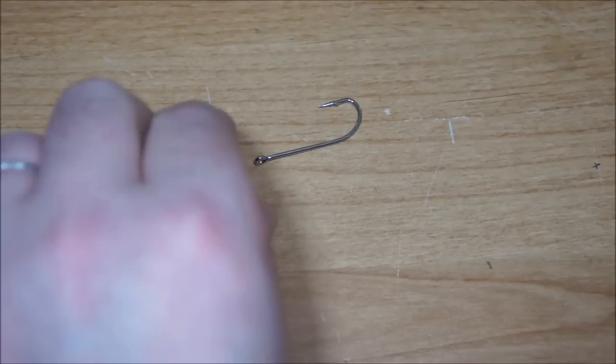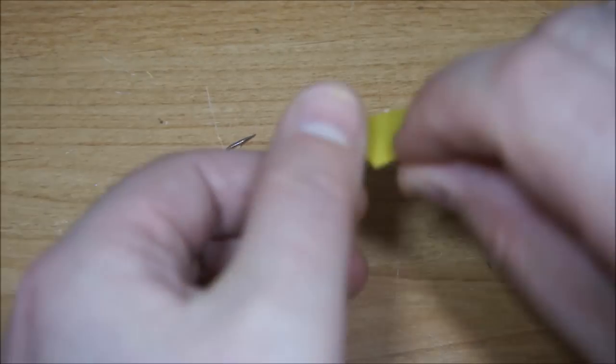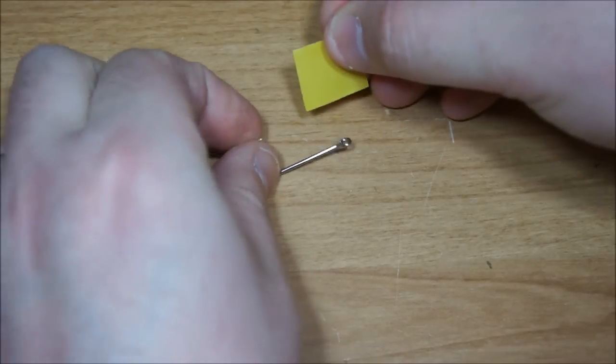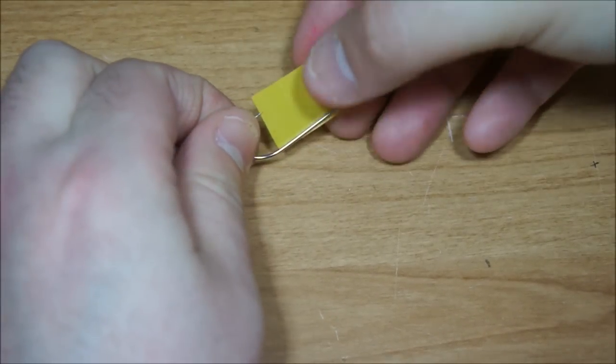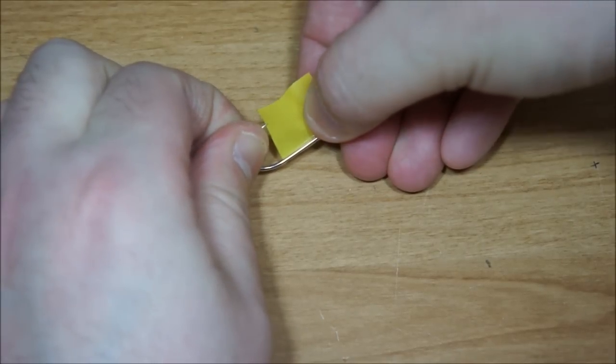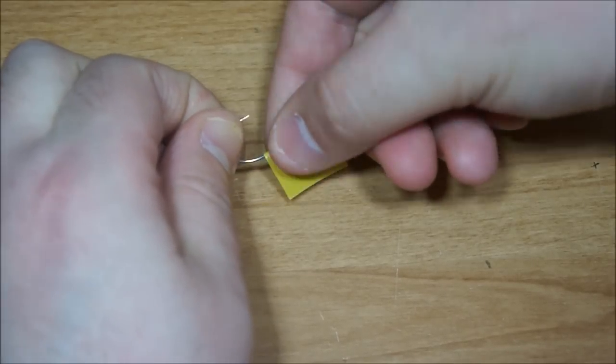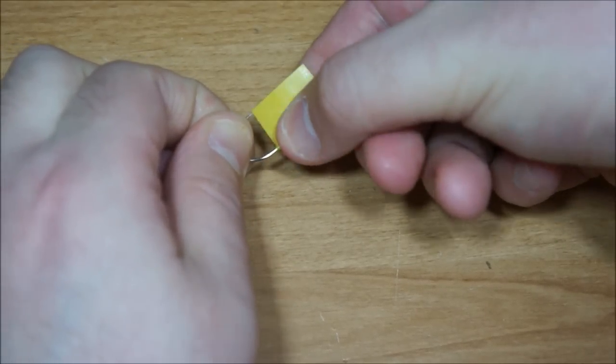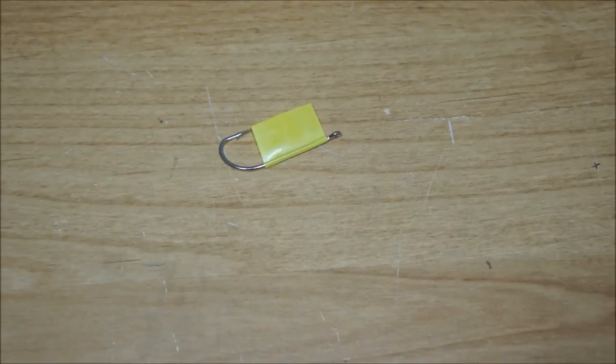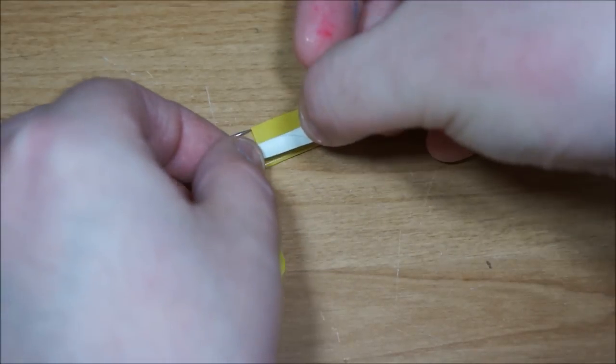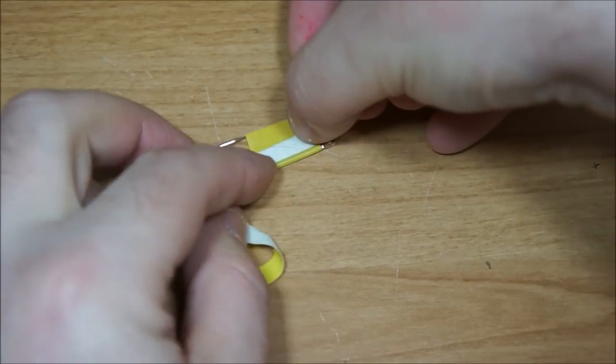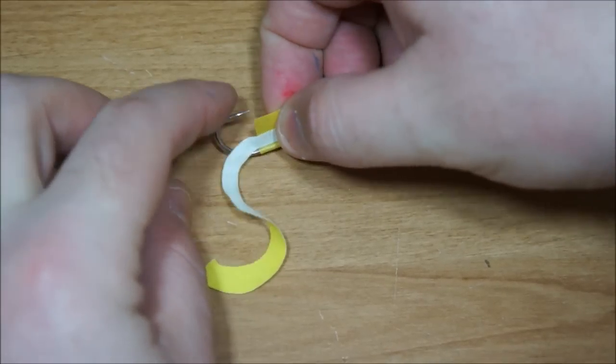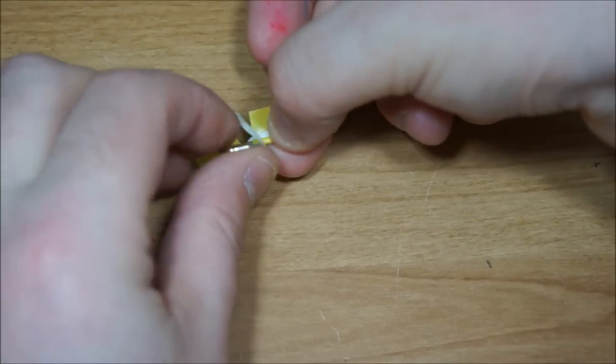Yeah it's about right. I'm just going to turn this hook over and then just attach the bottom of the tab to the hook. And then I'm just going to give it once round the hook. And then taking my curly tail I'm just going to lay it up against the shank. There we go. And then wrap that.